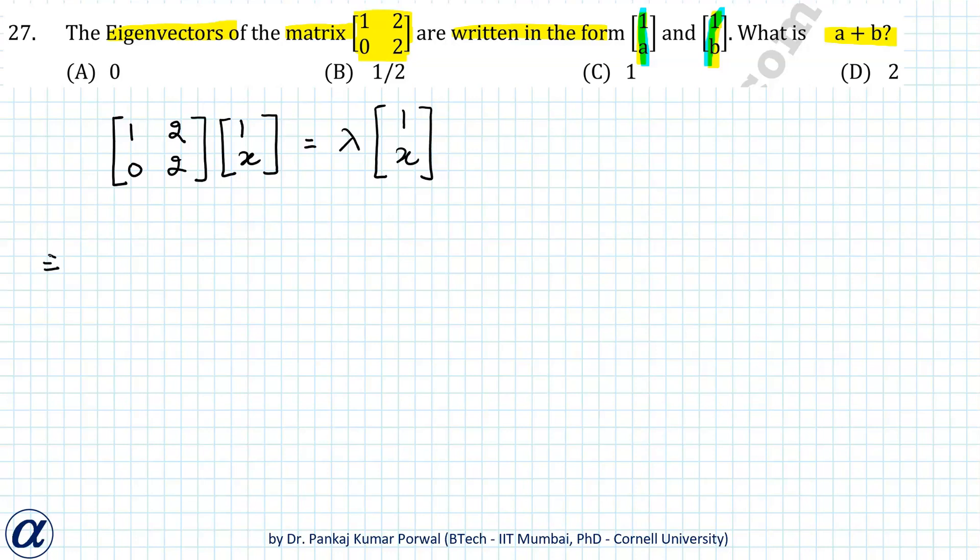If we simplify this equation, we get 1 plus 2x for the first row, and for the second row I get 2x. This equals λ and λx when we multiply lambda with the vector.